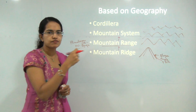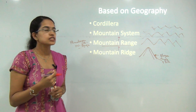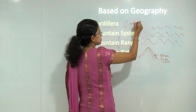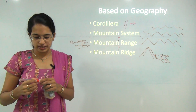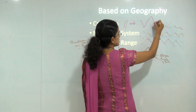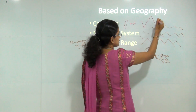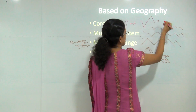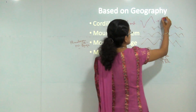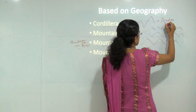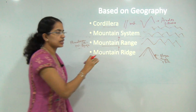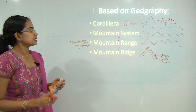Finally, what is a cordillera? Cordilleras are series of parallel mountains that lie across one another, and they include valleys as well as ridges. A classic example of a cordillera would be the Andes mountain range in South America. This was the most simple classification based on geography.